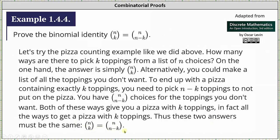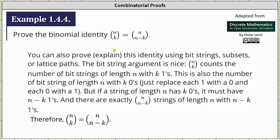And let's take a look at one more possible combinatorial proof. For the last combinatorial proof, we could use bit strings, subsets, or lattice paths. Let's go ahead and use bit strings.